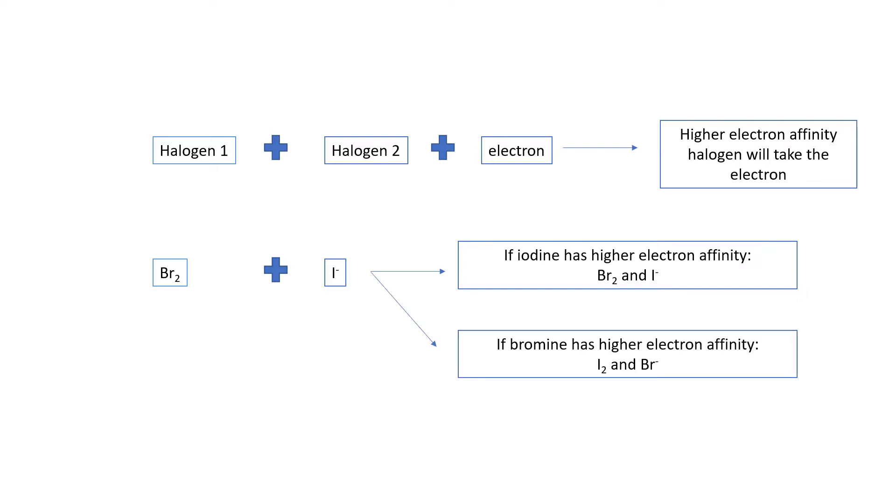But if bromine has the higher electron affinity, it will take the electron from the iodine and we will end up with iodine molecules and Br minus bromide ions.